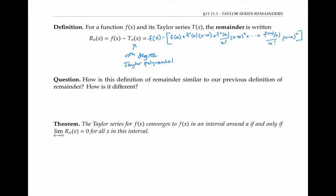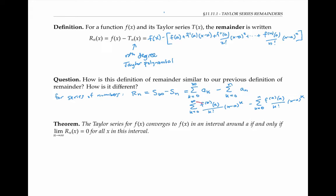Previously, when we looked at remainders for series, we wrote that the remainder was the infinite sum minus the nth partial sum. The analogous expression for Taylor series might be the entire Taylor series minus the first terms up through the degree n term. But that's not what we define the remainder to be for Taylor series. Instead, the remainder for Taylor series is the difference between the function and the first terms up to the degree n term. This is defined differently because for Taylor series, we're interested in the Taylor series converging to its function. Because we define the remainder as the difference between the function and its nth Taylor polynomial, it follows that the Taylor series for f of x converges to f of x in an interval around a if and only if the limit of the remainders is zero in this interval.